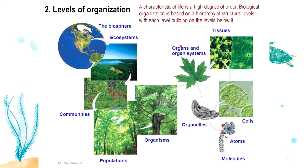Organs can eventually form organ systems. For example, your digestive system is an organ system made up of organs such as your esophagus, stomach, small and large intestine, rectum, pancreas, gallbladder, and liver. These different organs share a similar function, so they form an organ system.